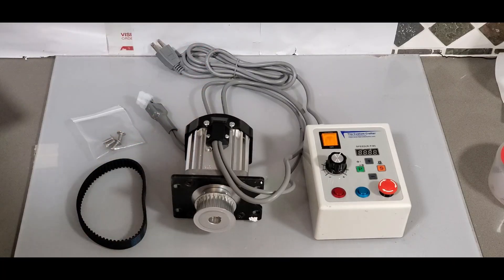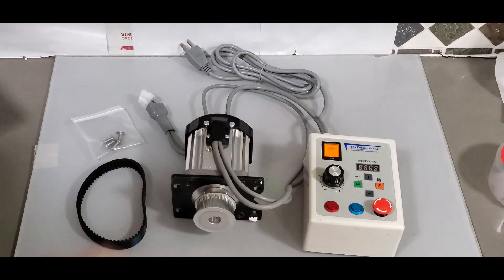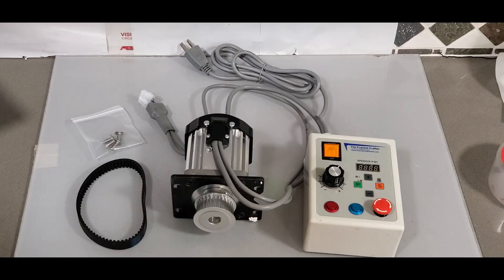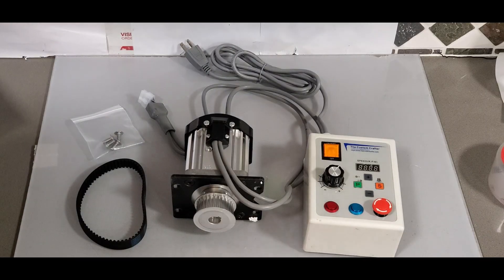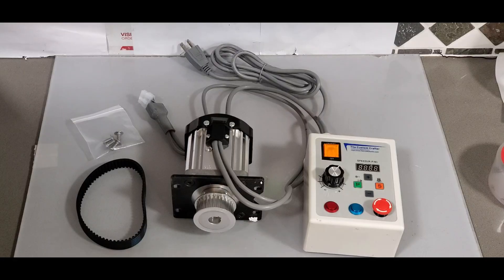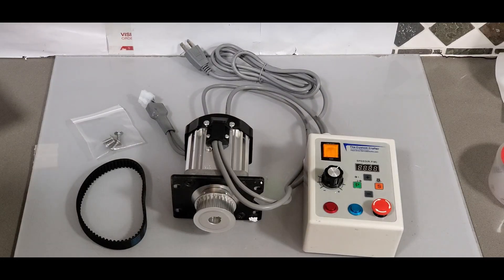It's just pull the old one off, pull the belt out, bolt this on, find a place to secure this on the wall behind your mill, or there are some mounting brackets and stuff that we make available and go. It comes pre-programmed and ready for the machine.